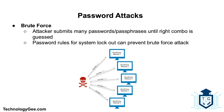Next is brute force. A brute force attack consists of an attacker submitting many passwords or passphrases with the hope of eventually guessing a combination correctly. The attacker systematically checks all possible passwords and passphrases until the correct one is found. System and network administrators setting up password rules that require a system to lock after a specified number of incorrect password inputs is one way to prevent a brute force attack. Longer passwords also aid in the fight against brute force attacks.